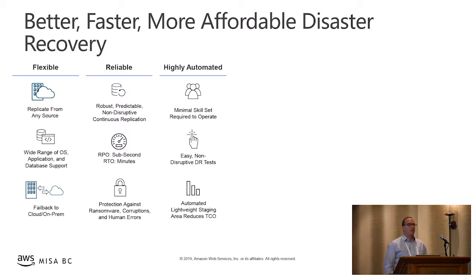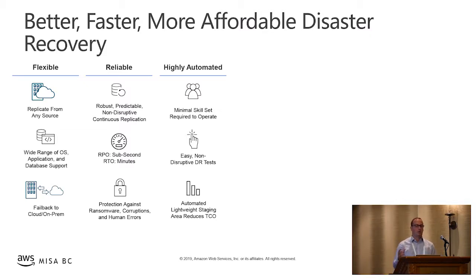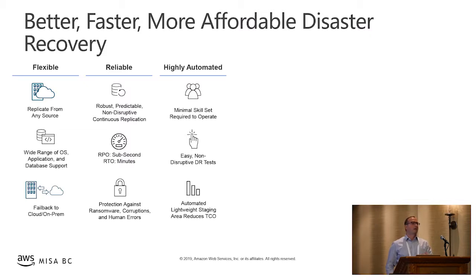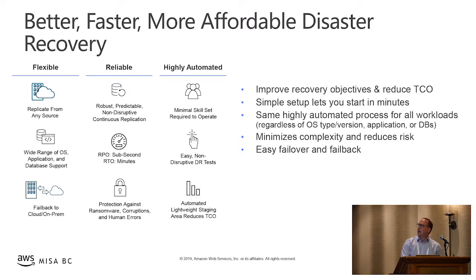It supports easy, non-disruptive DR tests — you can launch a test in the cloud, have it set up, run your test, and then destroy it when done. There are lots of ways to automate: if you run a production website on-prem, you can detect a failure, automate the DR story to kick up and recover, and update your DNS entries. You have the building blocks to automate the entire failover process. And you can also fail back — once up and running in the cloud, you can reverse the direction and restore back on-prem.